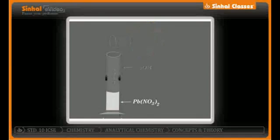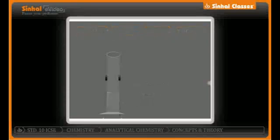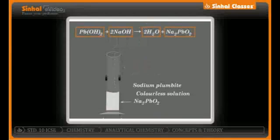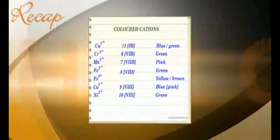Similarly, lead nitrate Pb(NO₃)₂ treated with excess NaOH gives NaNO₃ and Pb(OH)₂ — a chalky white precipitate indicated by a downward arrow. This precipitate, when treated further with excess NaOH, gives sodium plumbite Na₂PbO₂ along with water. It is also soluble in excess NaOH, yielding a colorless solution.